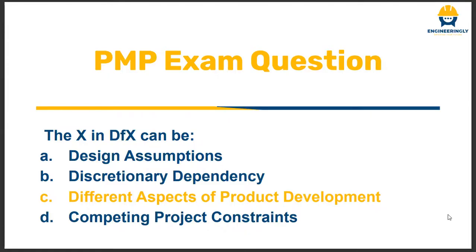The types of questions you can encounter in your PMP exam could be: the X in DFX can be A) design assumptions, B) discretionary dependency, or C) different aspects of product development, or D) the competing project constraints. As we mentioned, we are targeting one aspect in the product or project and making efficient processes to reach excellence in that specific aspect, so the answer should be C — different aspects of product development.